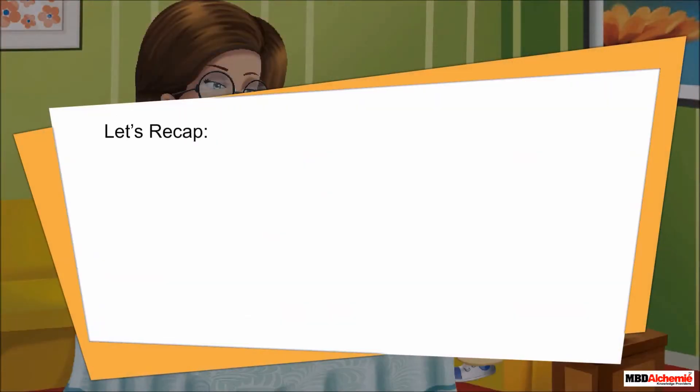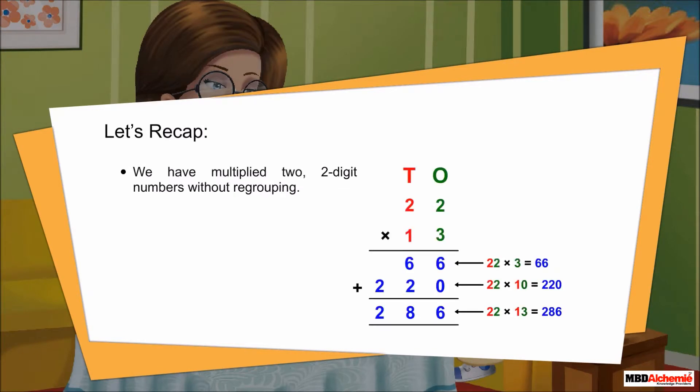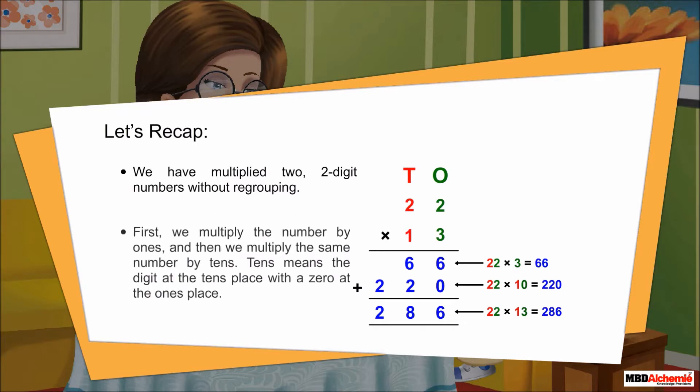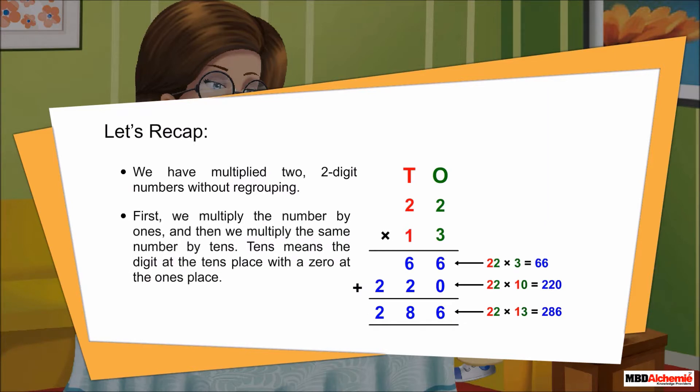Let's recap. We have multiplied two two-digit numbers without regrouping. First, we multiply the number by ones, and then we multiply the same number by tens. Tens means the digit at the tens place with a zero at the ones place. At last, we add both the products.